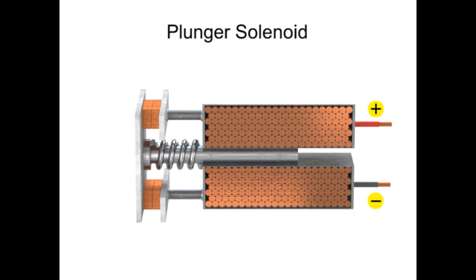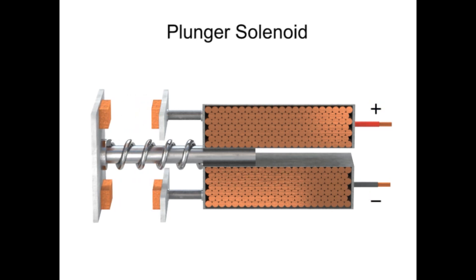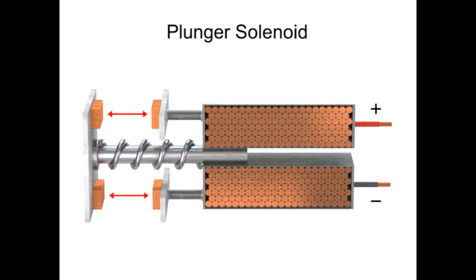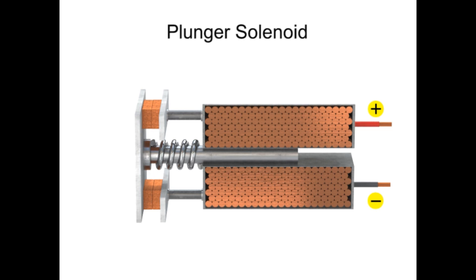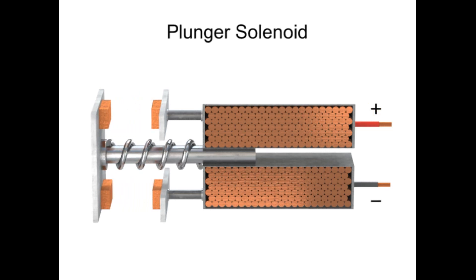When the current is turned off, the magnetic force is removed, and the tension in the spring forces the rod back out to its original resting position. This back-and-forth motion of the rod, to control a circuit, is used to operate a variety of mechanical devices.